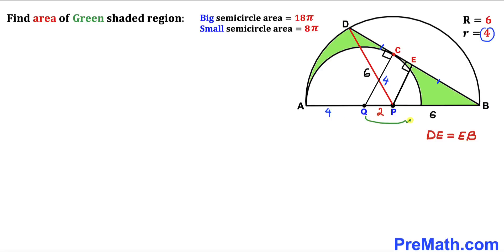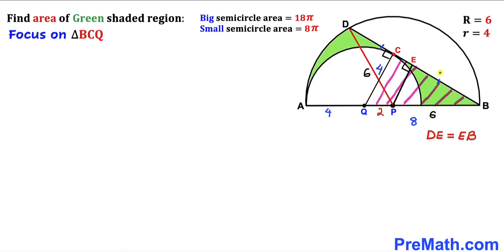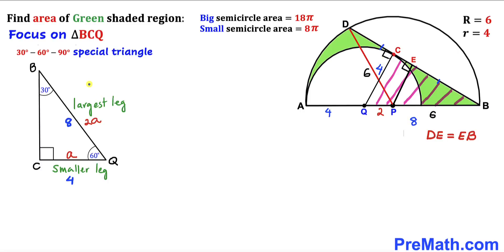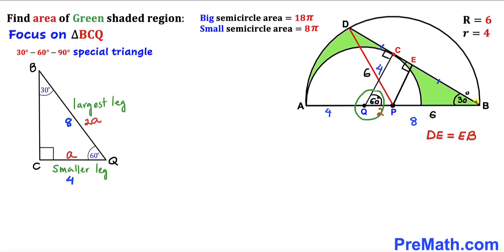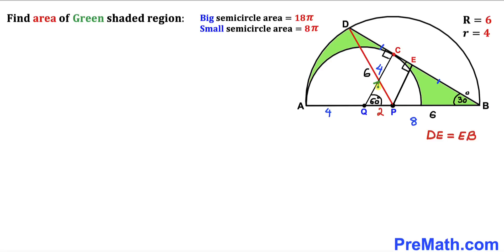The length QB equals 2 plus 6 equals 8. Focusing on right triangle BCQ, the smallest leg CQ is 4 and the largest leg QB is 8 — the largest leg is twice the smallest leg, making this a 30-60-90 triangle. Therefore angle BQC equals 60 degrees and angle QBC equals 30 degrees. Since line QC is parallel to line PE, the corresponding angles are congruent.